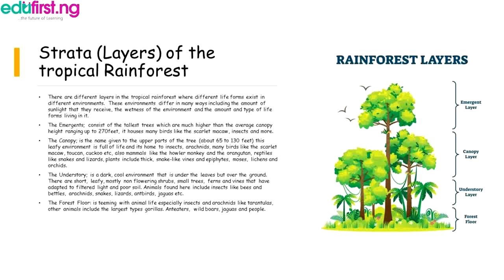The canopy is a leafy environment full of life and is home to insects, arachnids, many birds like the scarlet macaw and toucan, mammals like the howler monkey and the orangutan, and reptiles like snakes and lizards. Plants include thick snake-like vines, mosses, lichens, and orchids.